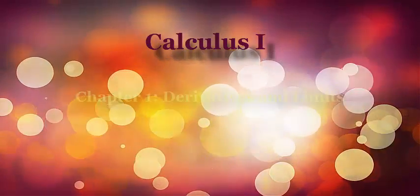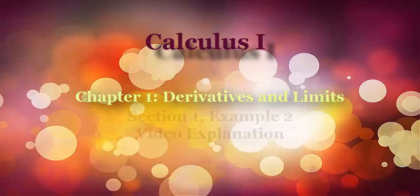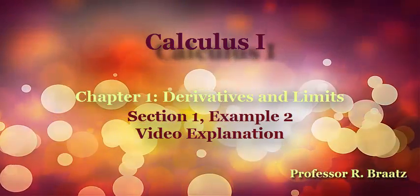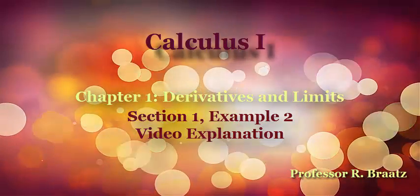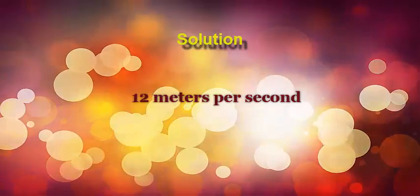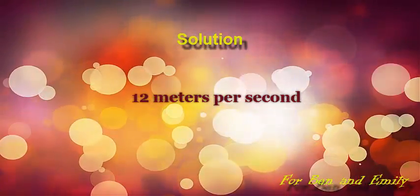Welcome back to Calculus 1. We're still in chapter 1, Derivatives and Limits. We're in section 1, looking at example number 2. This is the video explanation. The solution to this problem, which is given in the book, is 12 meters per second. So let's go ahead and see how we get that value.